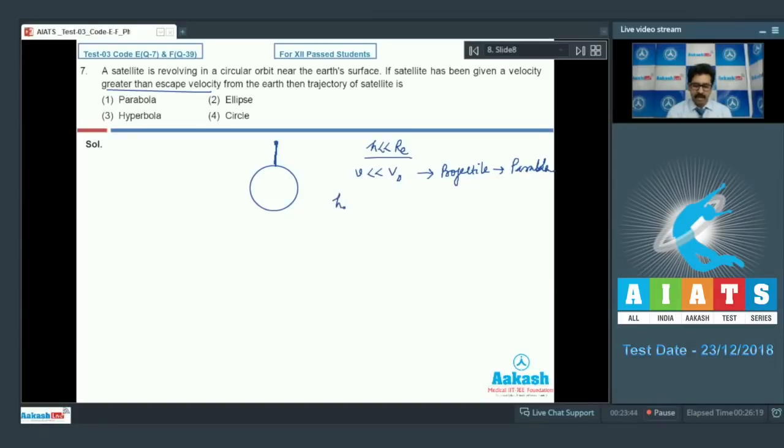But if height is very large, comparable to the radius of earth, and speed is less than orbital speed, then the path is elliptical. Because speed is very less, it cannot go very far and finally it strikes the earth surface. Speed less than orbital speed and height comparatively larger makes it elliptical.